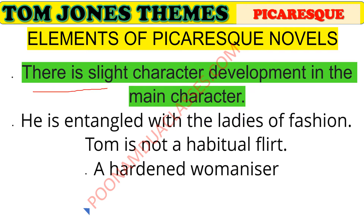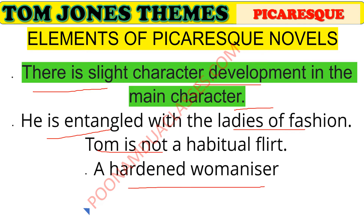There is slight character development in the main character. Tom Jones is very attractive and bright, and it is on account of his personality that women are drawn to him easily. He is entangled with ladies of fashion — he is not a habitual flirt but a womanizer — yet he is truly in love with Sophia. He must learn many lessons before achieving his true love, most specially the lesson of caution, before she accepts his marriage proposal at the end of the novel. By the end he learns how harmful it can be to have casual relationships.